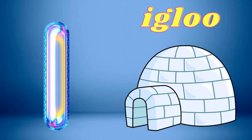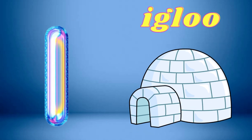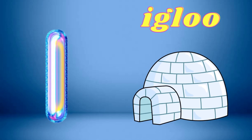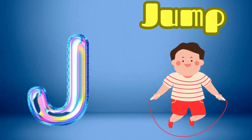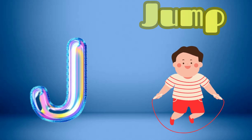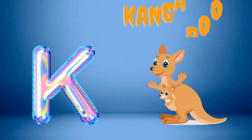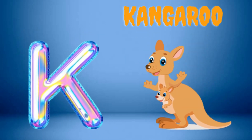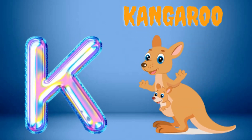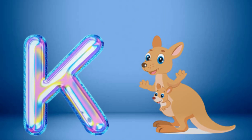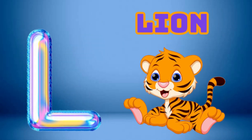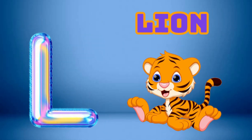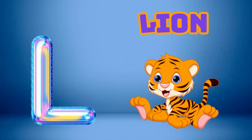I is for Igloo, I-I-Igloo. J is for Jump, J-J-Jump. K is for Kangaroo, K-K-Kangaroo. L is for Lion, L-L-Lion.